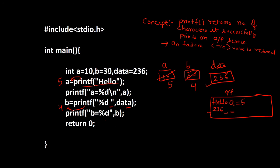So here we are printing 'b equal to' the value inside b, and the output is 'b equal to 4'. This is how we were getting all the output as shown. I hope you have got the idea. Similarly, the scanf function also returns an integer value — to know more about that you can watch my other video on the return value of scanf. Thank you for watching, goodbye.